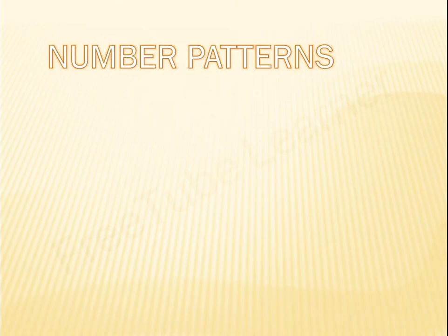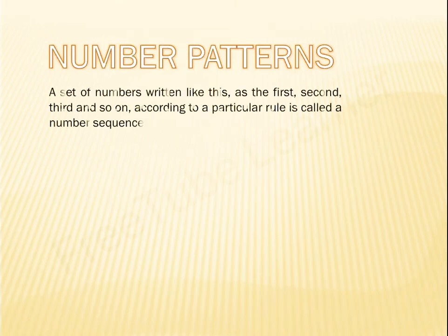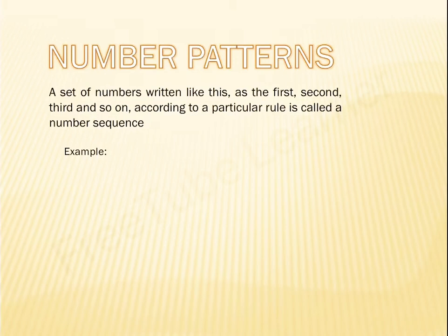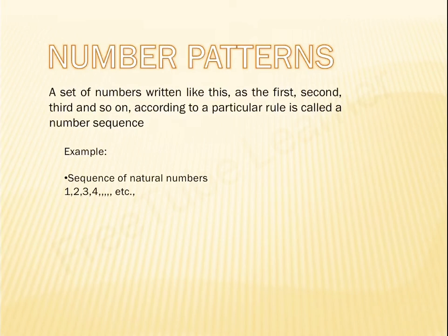Number patterns: a set of numbers written as the first, second, third and so on, according to a particular rule, is called a number sequence. One example is the sequence of natural numbers — the counting numbers. Natural numbers start from one: 1, 2, 3, 4, etc., are all natural numbers.